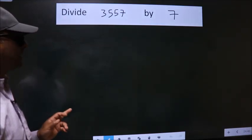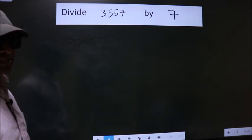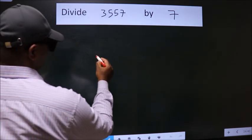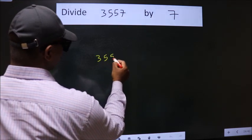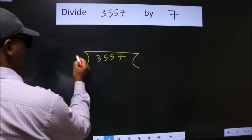Divide 3557 by 7. To do this division, we should frame it in this way. 3557 here, 7 here.